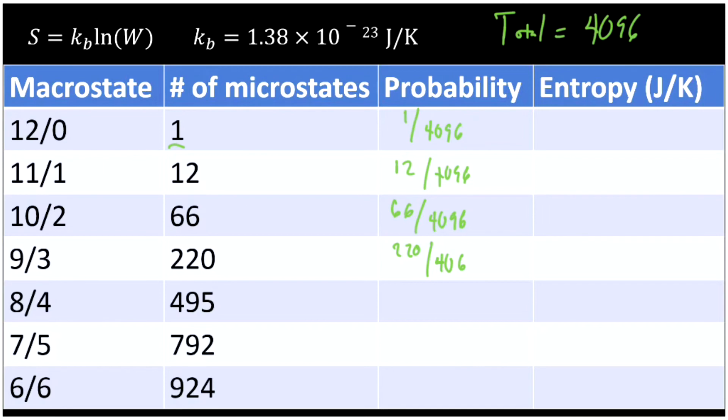Now the probability of the 11-1 split is 12 over 4096, then 66 over 4096, then 220 over 4096. So as you can see, not that hard to calculate. So this last one is the most likely, 924 out of 4096. So most of the time that we walked in and looked at this system, it would be in pretty close to an even split. About a quarter of the time, it would be an exactly even split, and then maybe sometimes it would be in a 7-5 or a 5-7 split.